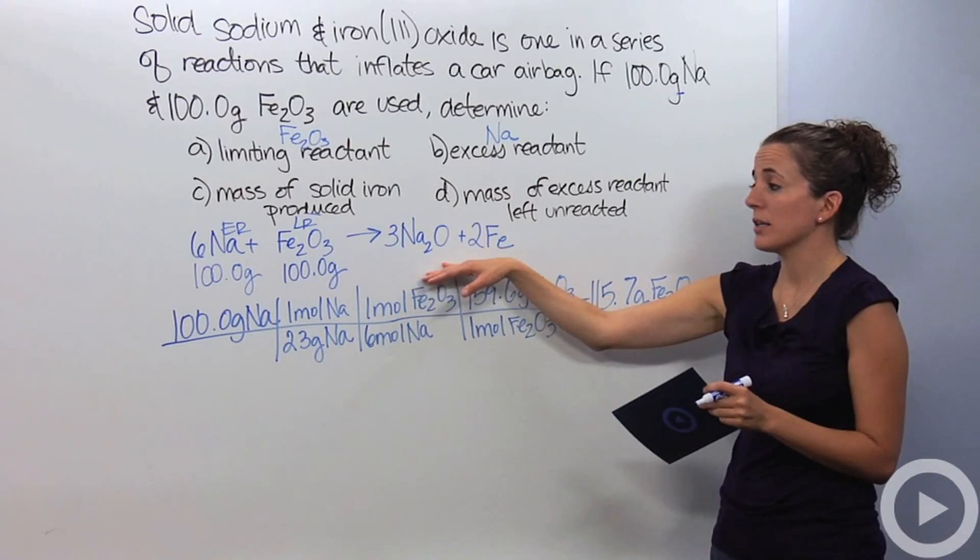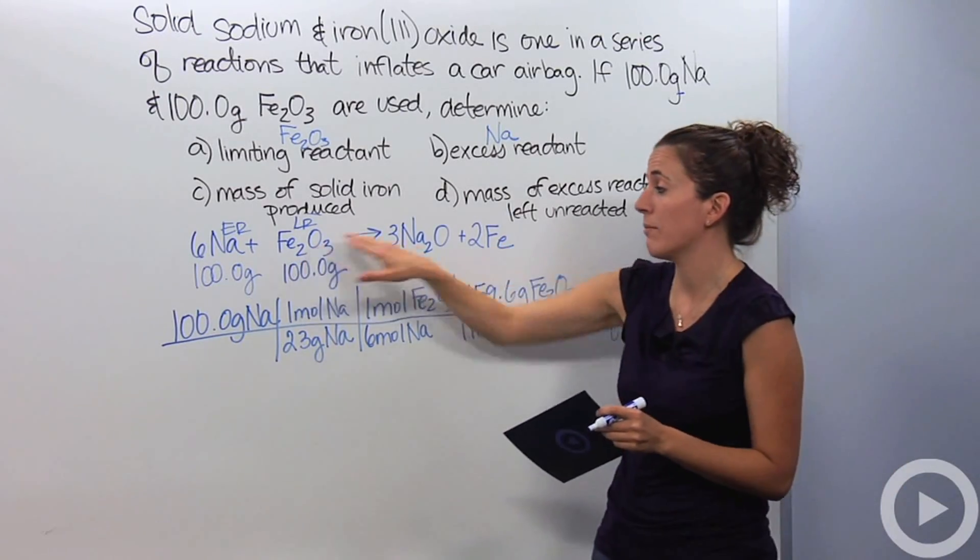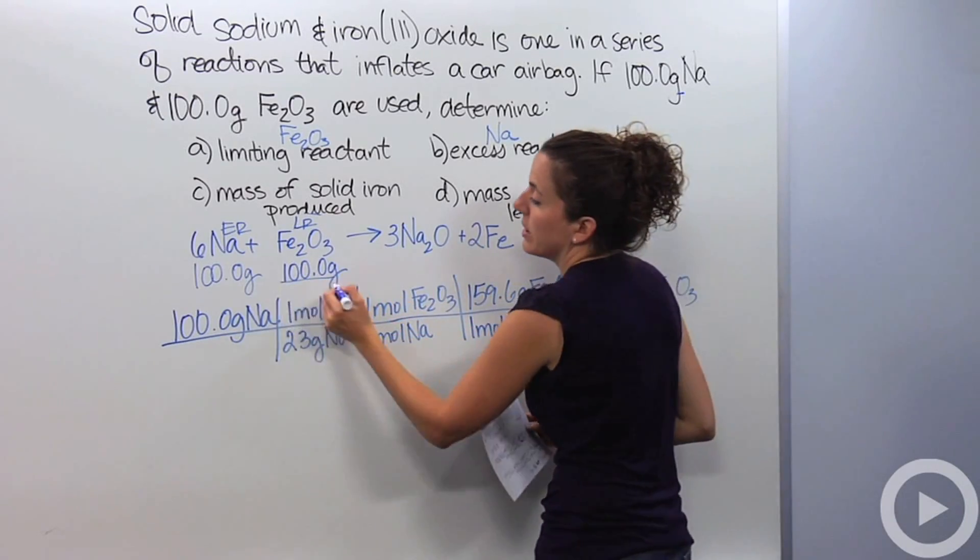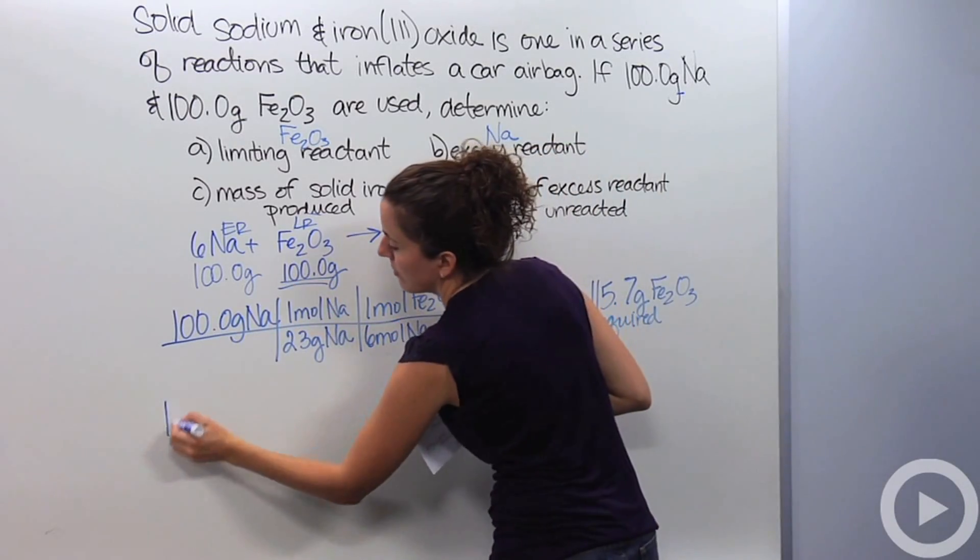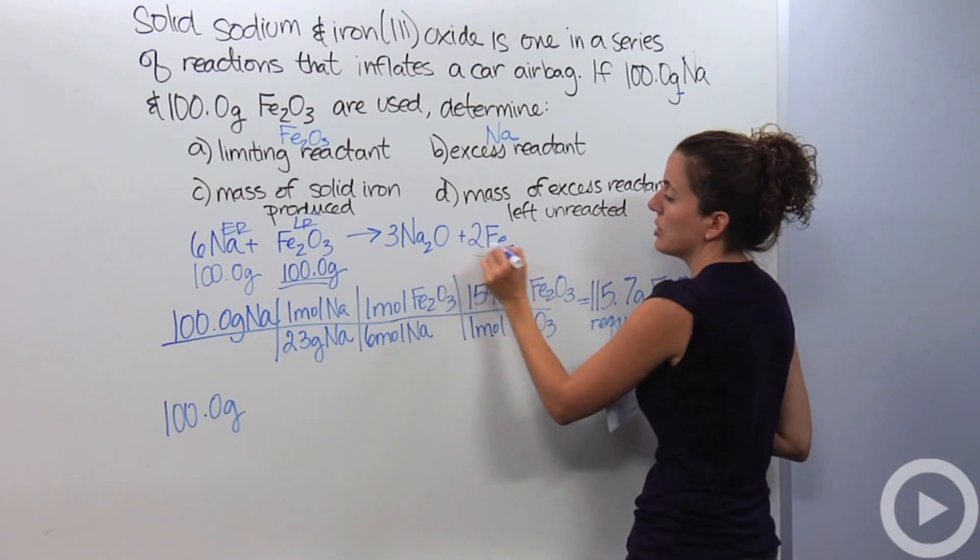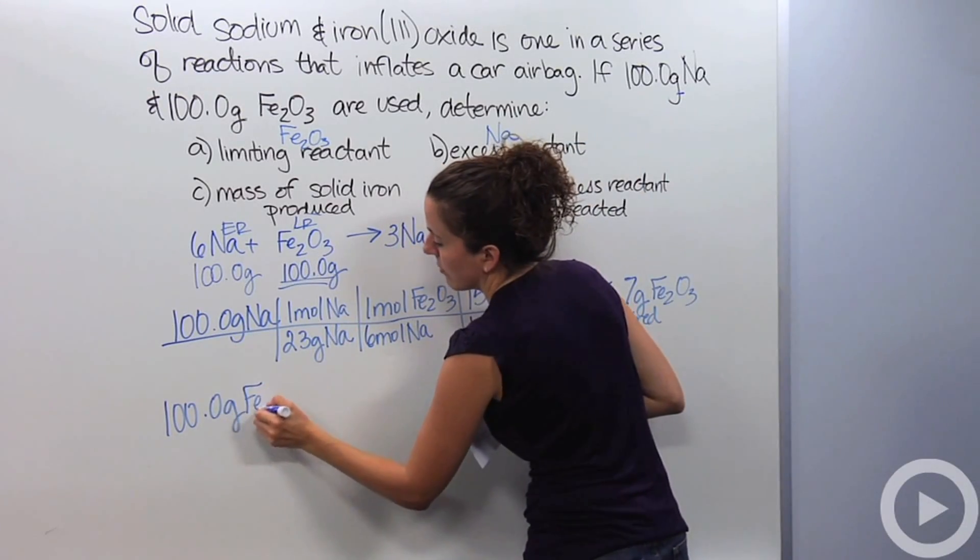What's the mass of solid iron produced? Well, in order to figure out how much products are produced, I have to go by my limiting reactant. My products are limited by my limiting reactant. So, I'm going to say, use this number here. I'm going to say 100 grams. And I'm going to have to do a mass-to-mass relationship to figure out how much iron I need. So, 100 grams of Fe₂O₃.